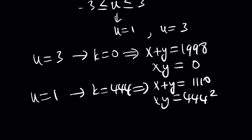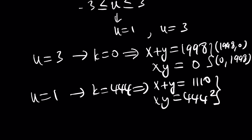From here we get the following solutions. Can you think of two numbers whose sum is 1998 and product is 0? One of them has to be 0, so (1998, 0) — and they can switch by symmetry. For the other case, two numbers whose sum is 1110 can be broken down as 888 and 222. That's pretty much all the solutions.